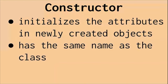So we're talking about these constructors. It initializes the attributes — forget all those words, it just constructs an object. And it has the same name as the class. It creates a new object and initializes the attributes. There are certain attributes depending on which constructor you use. Let me show you.